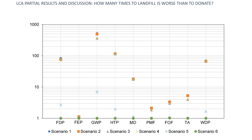How many times worse is landfilling compared to donation? Using scenario 6 as the best-case reference: in global warming potential, landfilling is 500 times worse than donating. In fossil depletion potential, human toxicity potential, and water depletion potential, landfilling is approximately 100 times worse than donating.